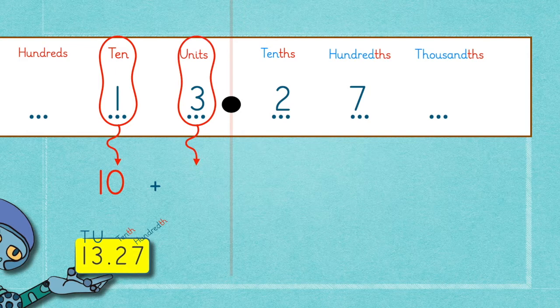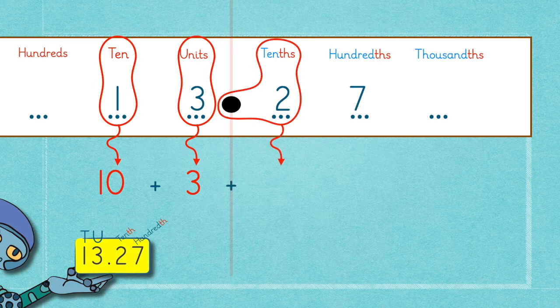Three units is 3. On the other side, 2 tenths becomes 0.2.